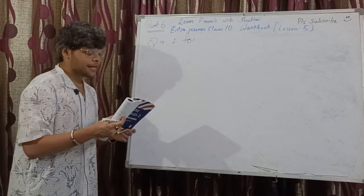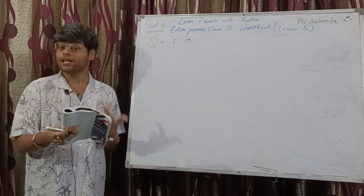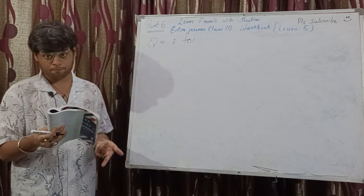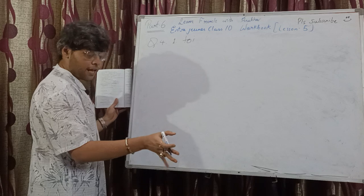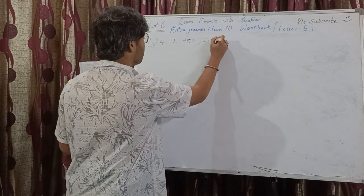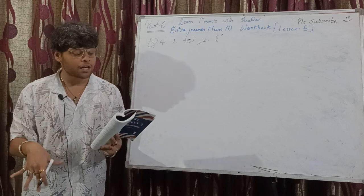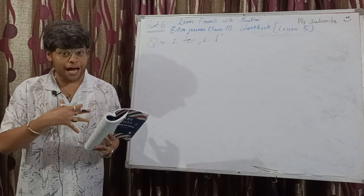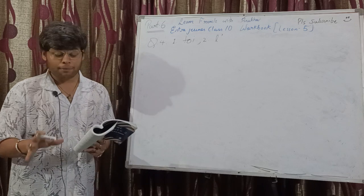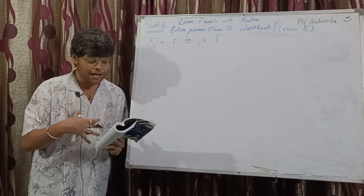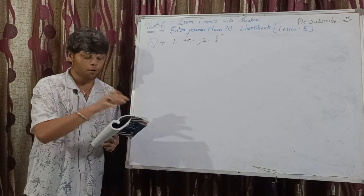Second one: 'Ma leçon de français — je — ai fini.' The verb 'fini' has an extra E, indicating a COD. COD will be 'la' for 'ma leçon.' The next word starts with a vowel 'ai,' so it becomes 'je l'ai.' So the answer is L-apostrophe. Third one: 'Mon mari et — nous allons au cinéma ce soir.' My husband and I — that gives 'nous' — so the answer is 'mon mari et moi.'